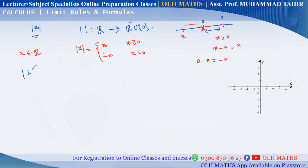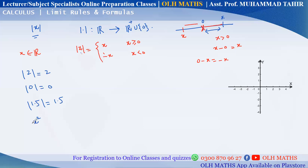For example: absolute value of 2 is simply 2, because 2 is non-negative. Absolute value of 0 is 0. Absolute value of 1.5 is 1.5, because 1.5 is positive so the mod is removed. For any real number x, x squared is always non-negative, so the absolute value of x squared is simply x squared.